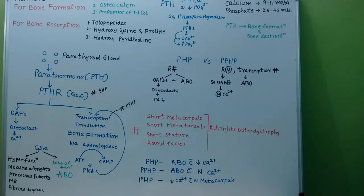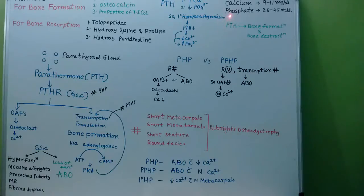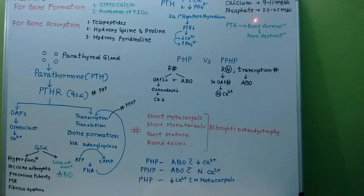First of all, I am going to tell you about normal levels of calcium. Normal levels of calcium are 9–11 mg per decilitre, and normal levels of phosphate are 2.5–4.5 mg per decilitre. These are the phosphate levels for adults. Normal levels of phosphate are more for children than adults, because bone-forming capacity for children is more.